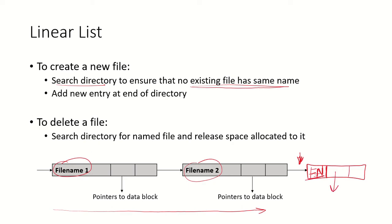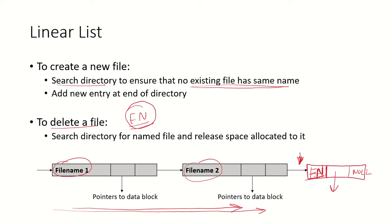A new file entry would be made with the new file name, a pointer to its data block, and then null if this is the last entry. If we want to delete a file, given the file name, the whole list will have to be searched for that particular file name, and then the space that has been allocated to it will have to be released.